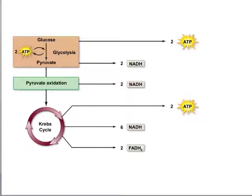The product of pyruvate oxidation, which is acetyl-CoA, enters the Krebs cycle, and then it produces two more ATP molecules, and it reduces six molecules of NAD+ into NADH molecules, and it reduces two molecules of FAD into FADH2 molecules. Again, this is per molecule of glucose.